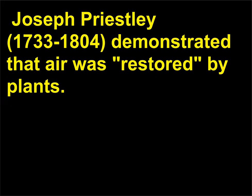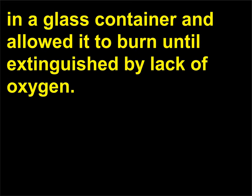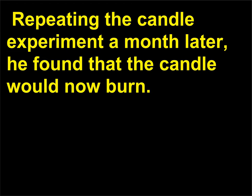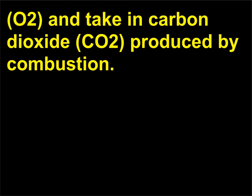Van Helmont concluded the plant had received all its nourishment from water and none from the soil. Joseph Priestley, 1733–1804, demonstrated that air was restored by plants. In 1771, Priestley placed a lighted candle in a glass container and allowed it to burn until extinguished by lack of oxygen. He then put a plant into the same chamber and allowed it to grow for a month. Repeating the candle experiment a month later, he found that the candle would now burn. Priestley's experiments showed that plants release oxygen (O₂) and take in carbon dioxide (CO₂) produced by combustion.